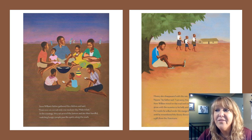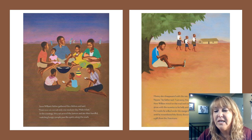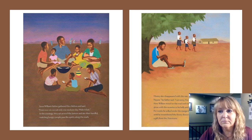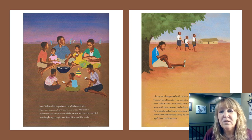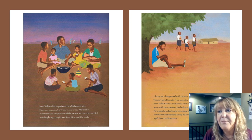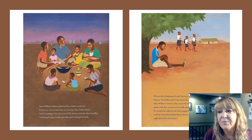Soon William's father gathered the children and said, from now on, we eat only one meal per day. Make it last. In the evenings, they sat around the lantern and ate their handful, watching hungry people pass like spirits along the roads. Money also disappeared with the rain. So William's father said, I am sorry, you will have to drop out of school. Now William stood on the road and watched the lucky students pass, alone with the monster in his belly and the lump in his throat. For weeks he sulked under the mango tree, until he remembered the library down the road — a gift from the Americans.